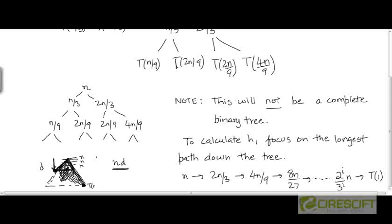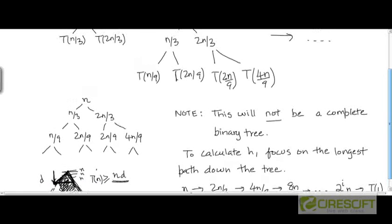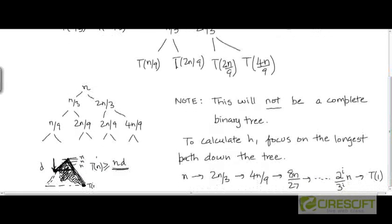So whatever be the cost of the remaining portion of the tree below this level, it will be at least bounded from below by n times d. That's what we are guessing intuitively. So what will be this depth d?